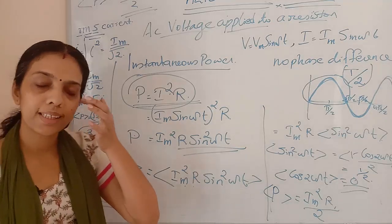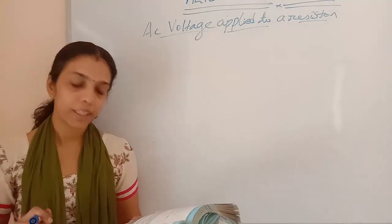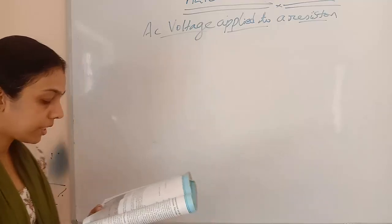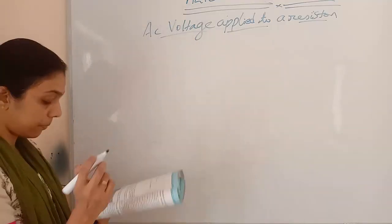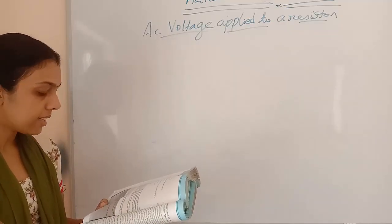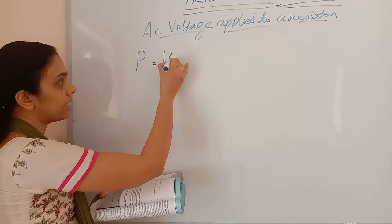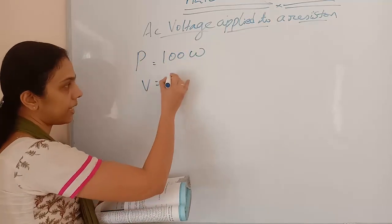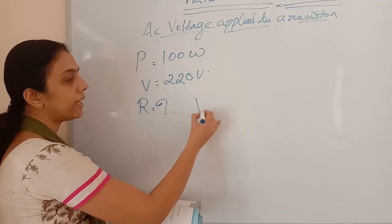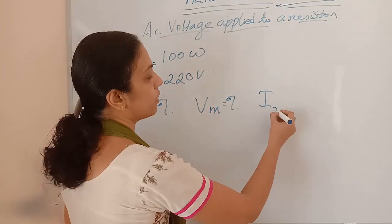This is how we represent instantaneous and average power. Now let's do a numerical: a light bulb is rated at 100 W for a 220 V supply. Find the resistance of the bulb, the peak voltage of the source, and the RMS current through the bulb. Given: P = 100 W, V = 220 V.